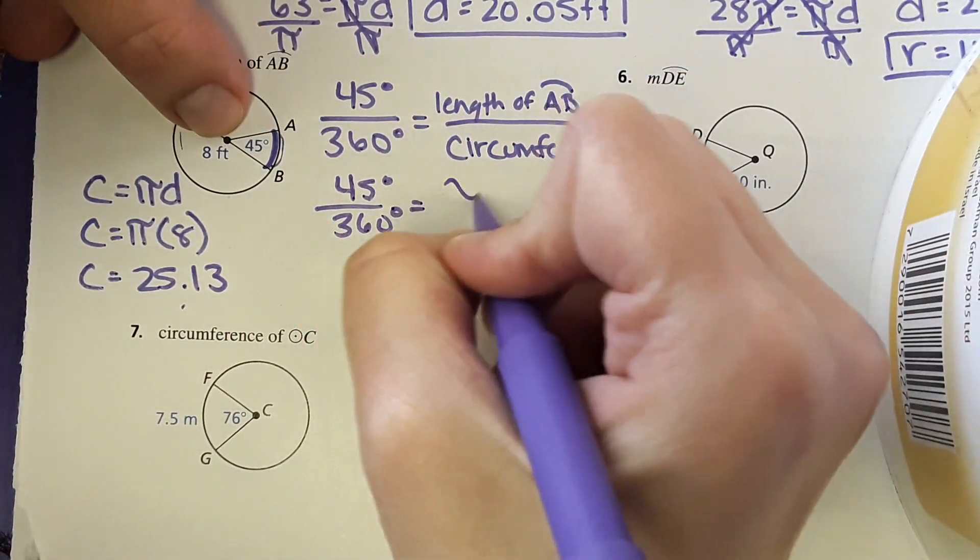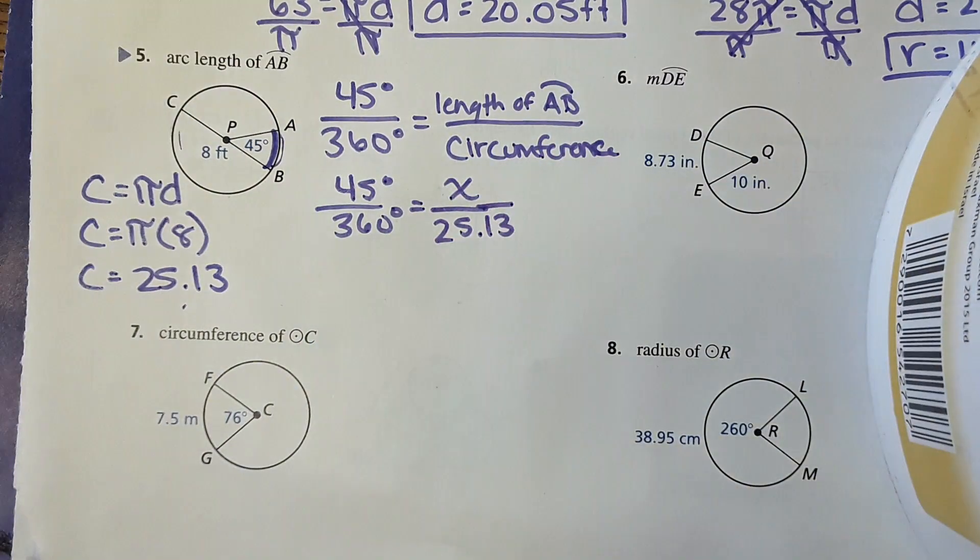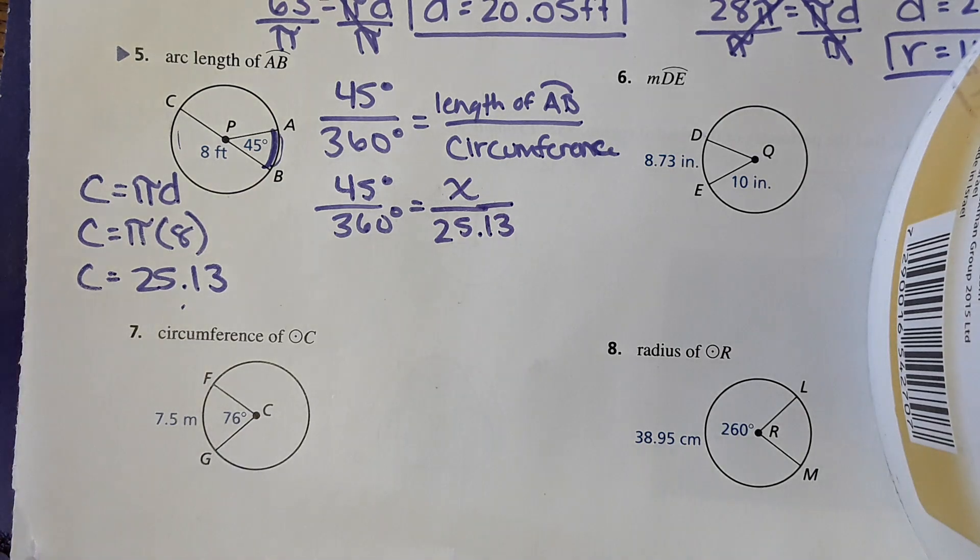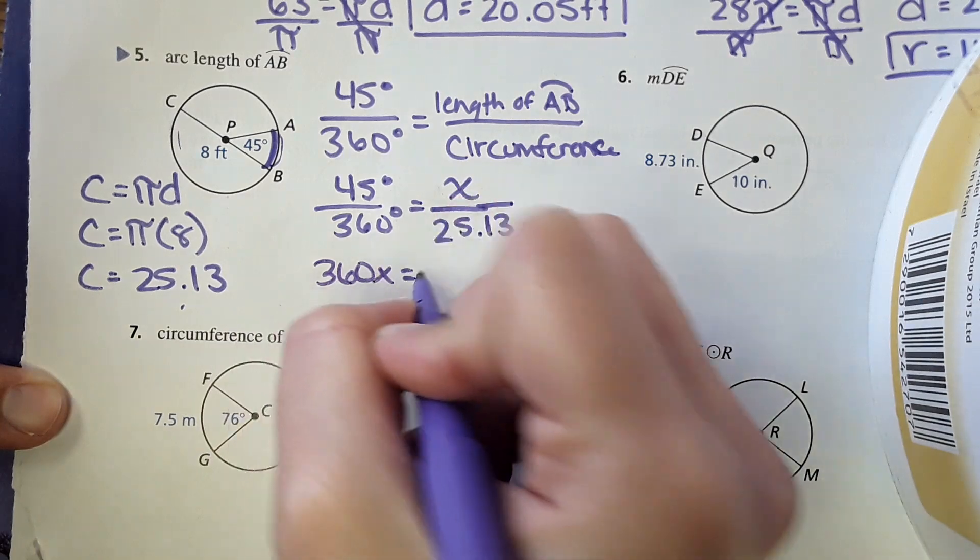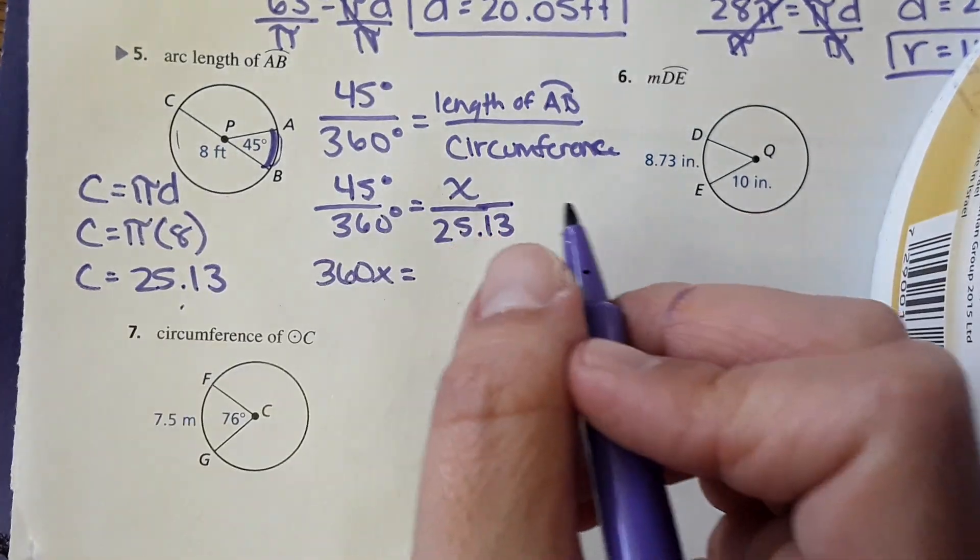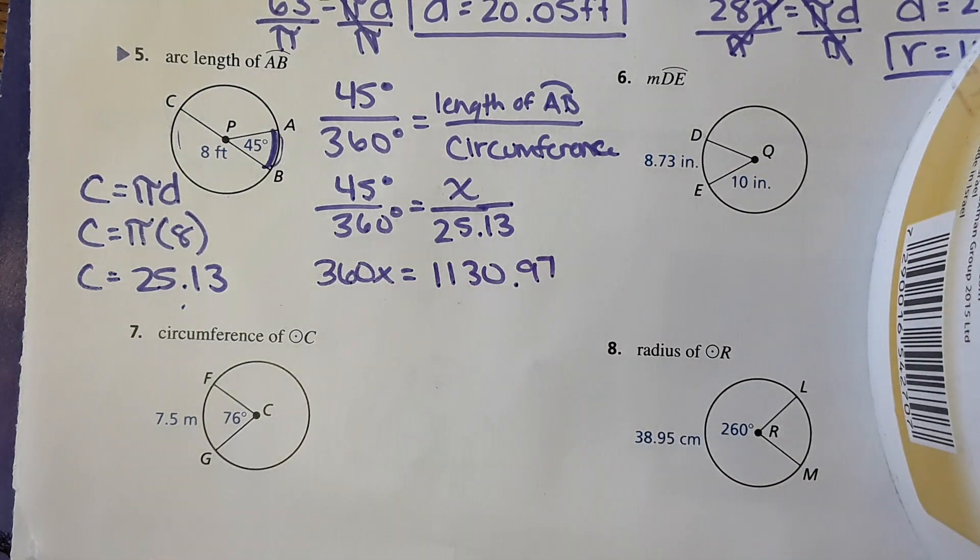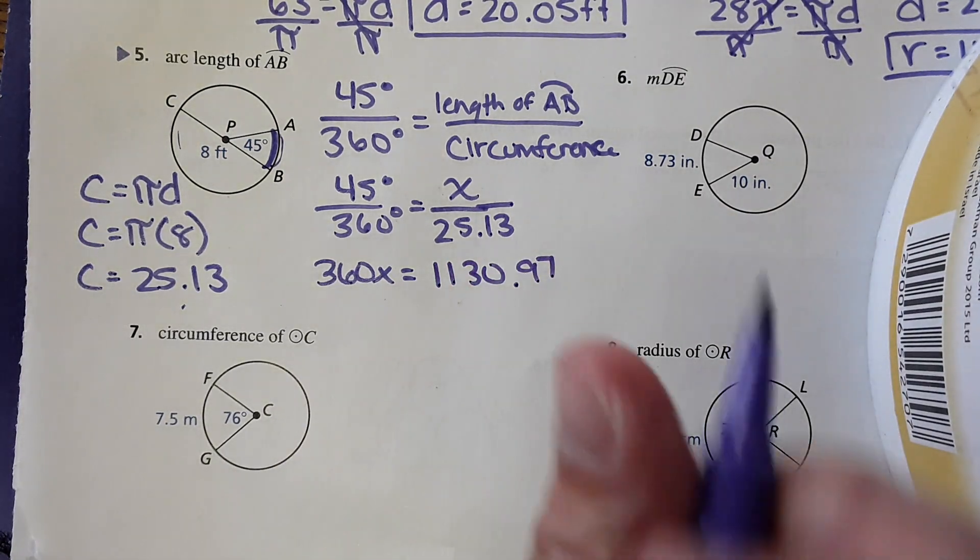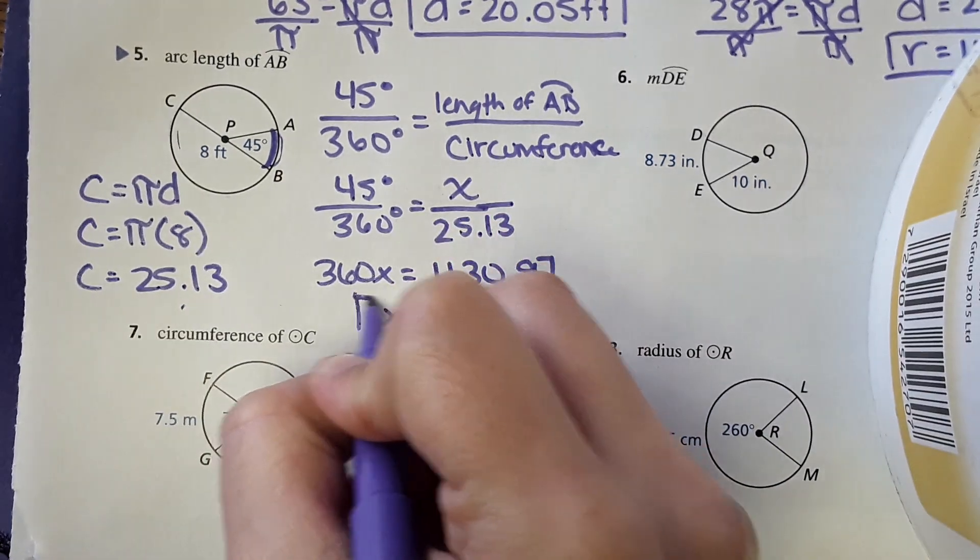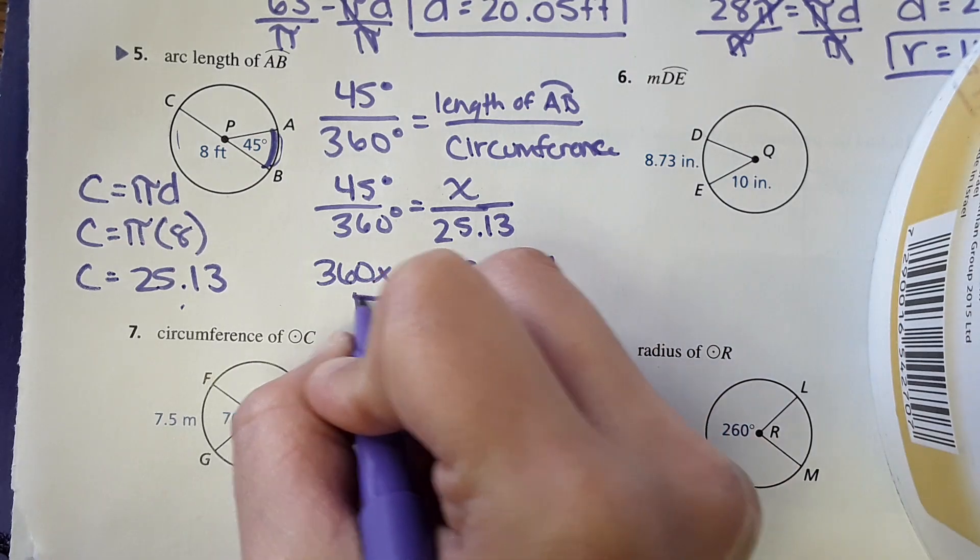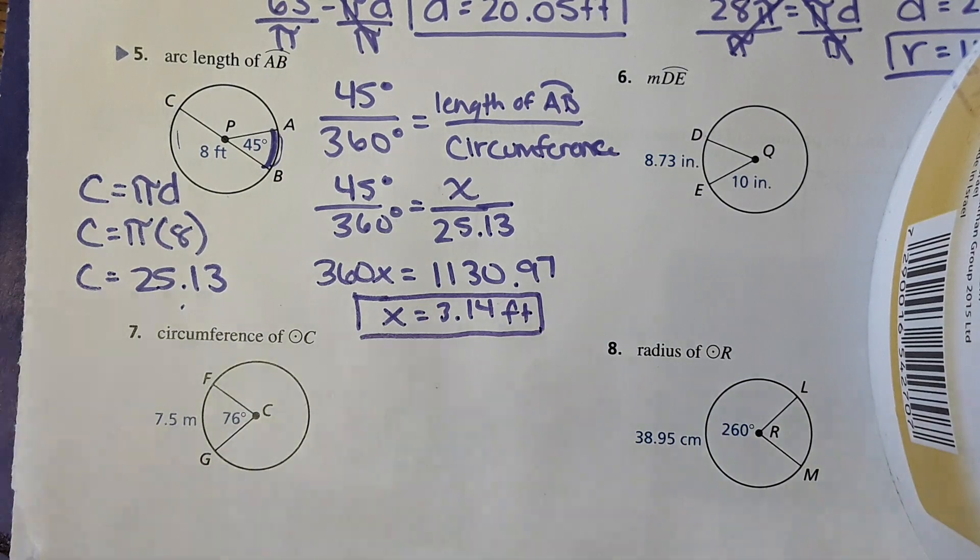And then you can set up the ratio, so it would be forty-five over three sixty equals x length of arc AB over the total circumference. And then we'll use cross multiplication.